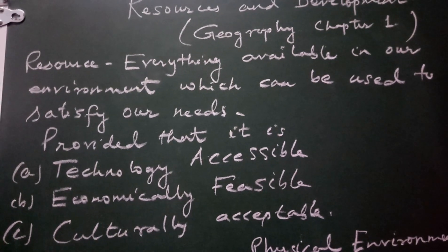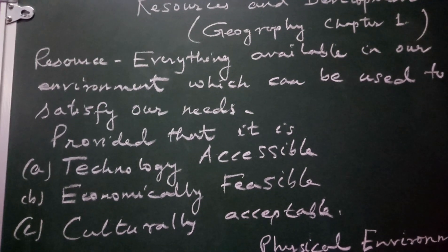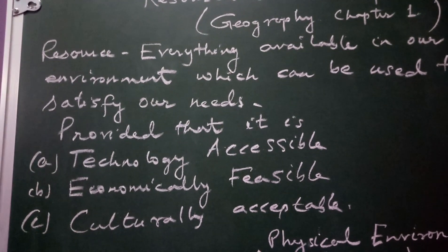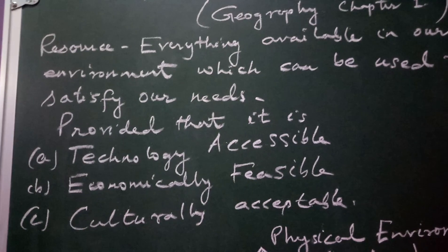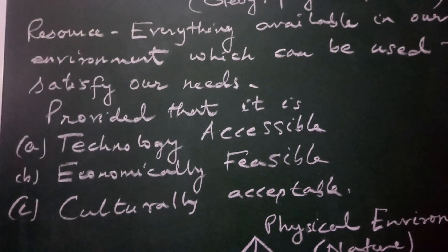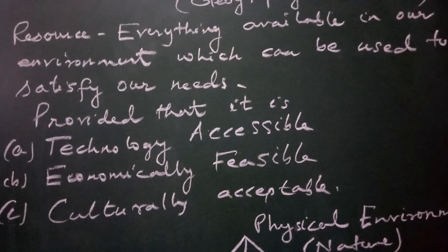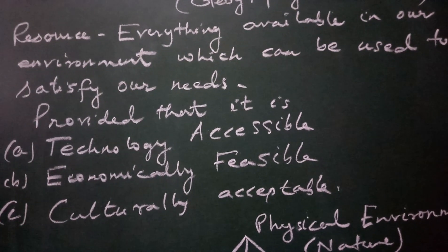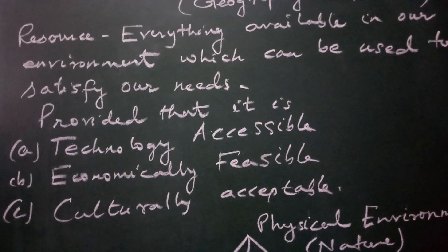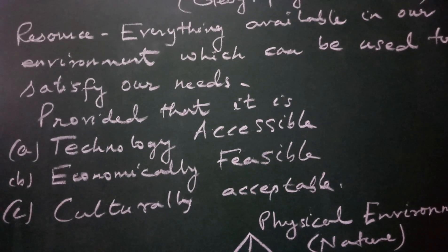First, it must be available in our environment. Second, it must have the capacity to satisfy our needs. Next, it must be technologically accessible. Technologically accessible means we must have appropriate technology to convert a particular thing into a resource. For example, we have sunlight, and if we do not have the technology to access it, then we cannot call sunlight as a resource.